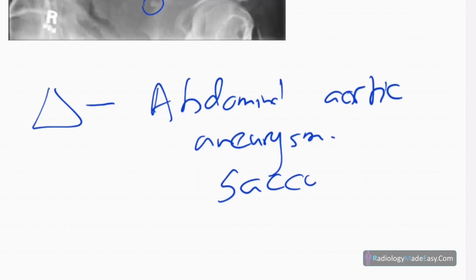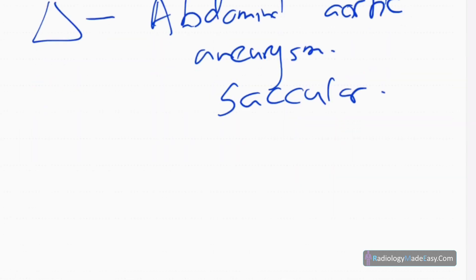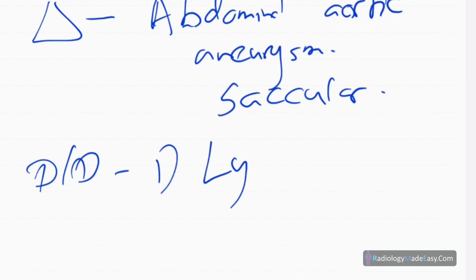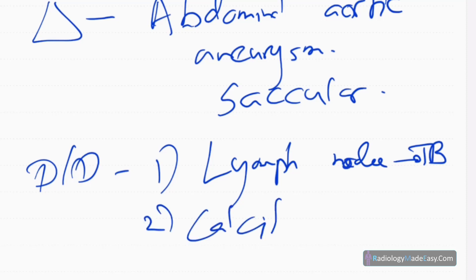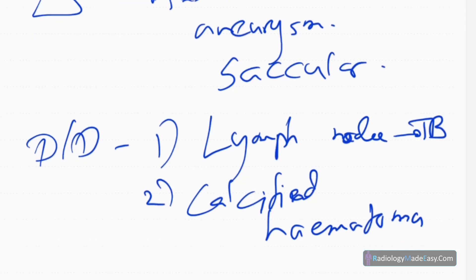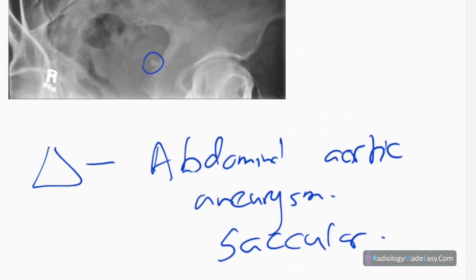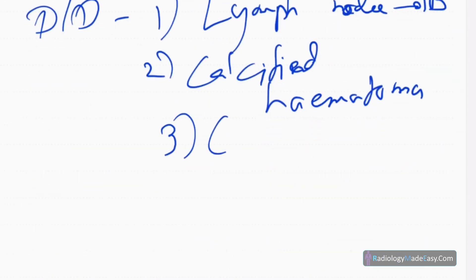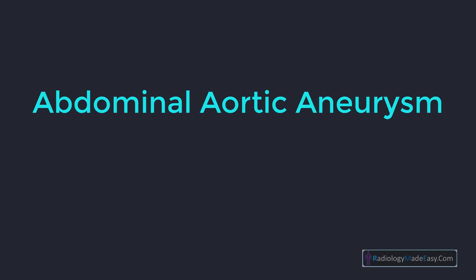This is a saccular aneurysm. You can also consider differential diagnoses for this kind of lesion in the midline — especially a calcified lymph node, probably due to TB, and also a calcified hematoma. A carcinoid can also calcify. These are a few differential diagnoses for a calcified midline abdominal mass.